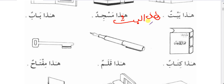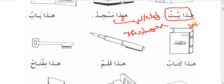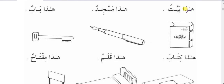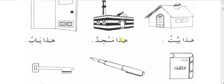'Haza al-baitu' means 'this house' — an incomplete phrase. But 'haza baitun' means 'this is a house' — a complete sentence. Haza baitun is muptada-khabar because muptada is maarefa and khabar is nakera. Haza is isma ishara which is maarefa, and baitun is nakera because it has tanwin. So when the opening part of any sentence is maarefa and the closing part is nakera, they are muptada-khabar.